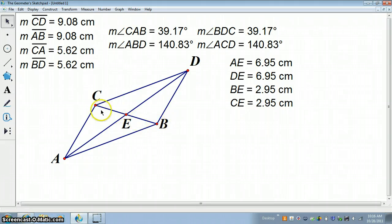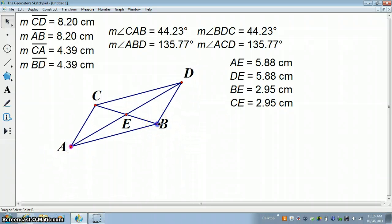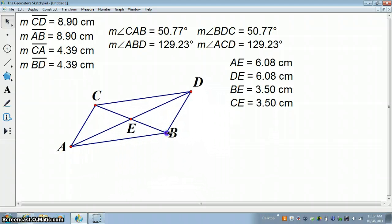Notice that BE and CE are congruent. And segments DE and AE are congruent. No matter what our parallelogram looks like, that will be the case. And what that means, then, is that the diagonals of a parallelogram bisect each other.